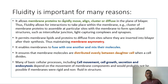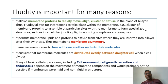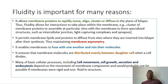Fluidity allows membrane proteins to rapidly move, align, cluster, or diffuse in the plane of the bilayer, enabling interactions to take place within the membrane. For example, clusters of membrane proteins can assemble at particular sites to form specialized structures such as intercellular junctions, light-capturing complexes, and synapses. Lipid rafts are formed when there is a requirement for the cell to receive a particular signal — they form flask-shaped structures called caveolae, or independent clusters of cholesterol, lipids, and proteins that enhance protein interactions and carry out signal transduction cascades inside the cell.